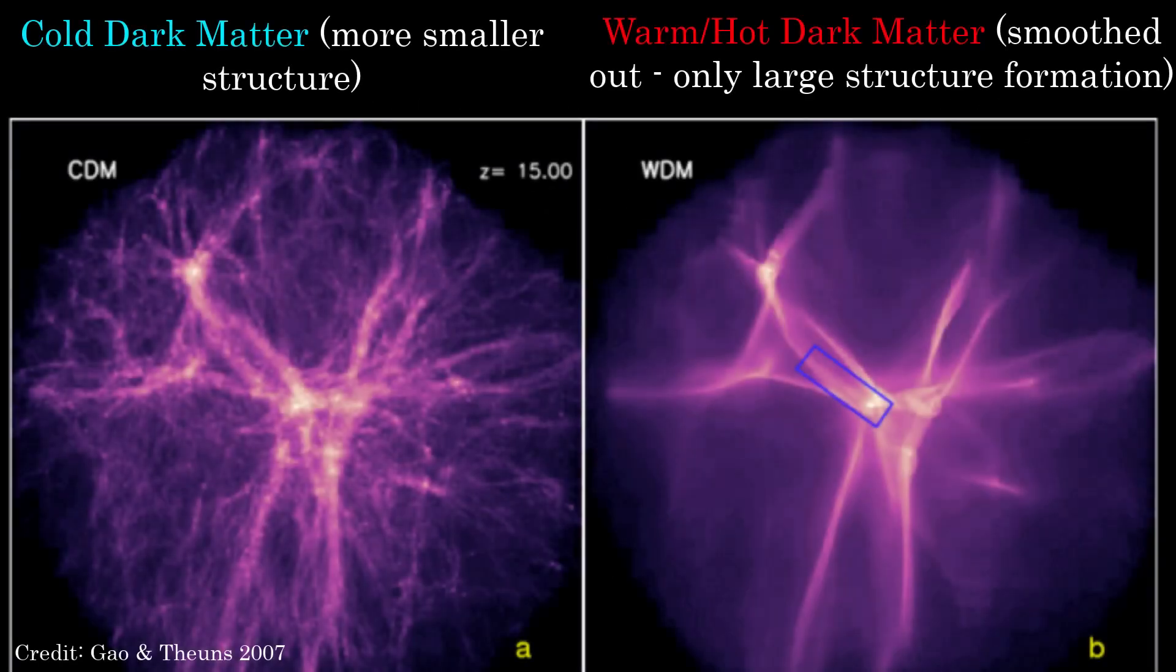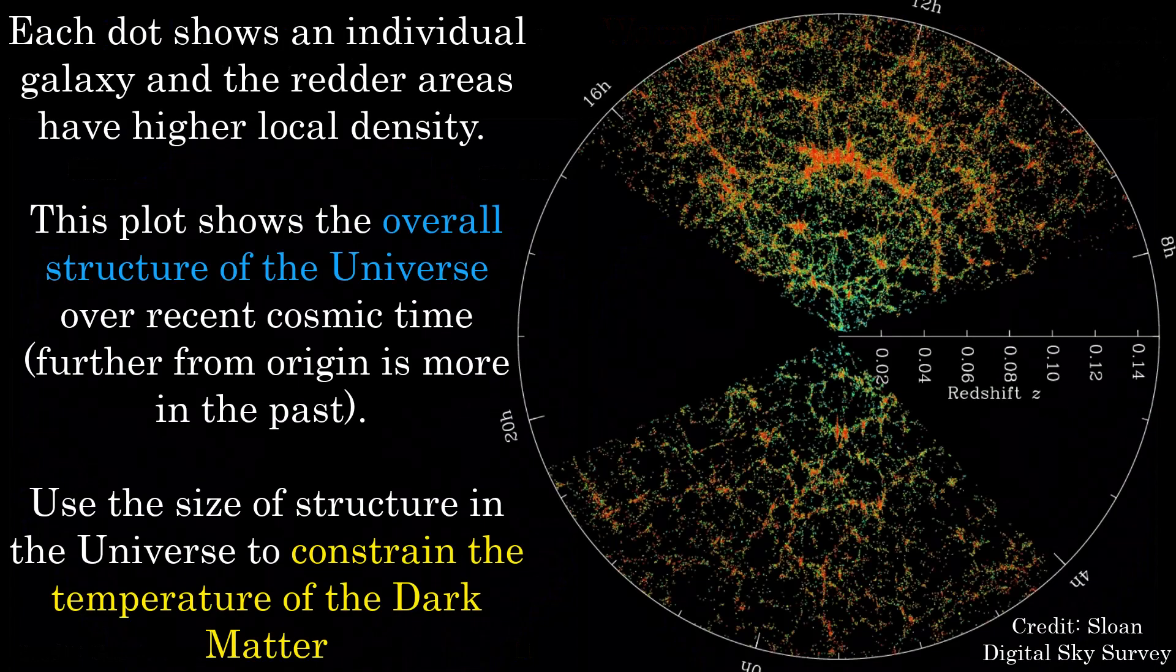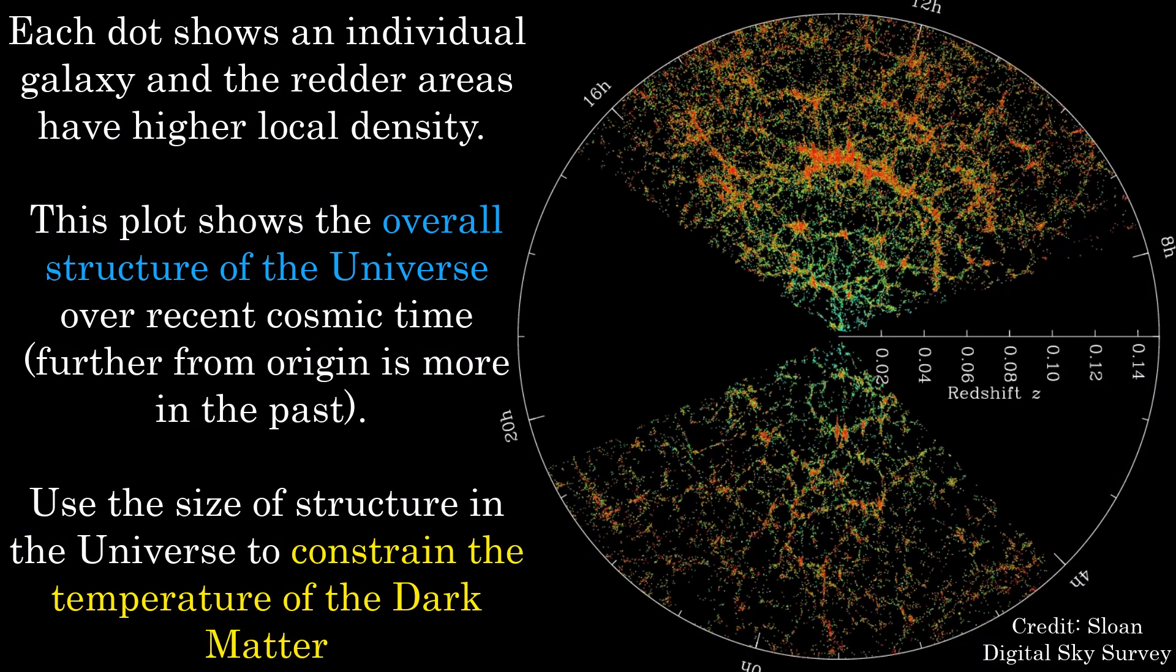In hot dark matter, only the largest structures which originated from the largest initial density perturbations survive the large free streaming effect. Whereas in cold dark matter, relatively smaller structures can survive as free streaming is weaker. Therefore, let's measure the size of perturbations, overdensities and the size of structure in the universe using satellites, such as by measuring the CMB anisotropy spectrum or conduct galaxy surveys.